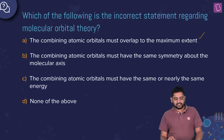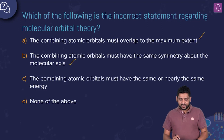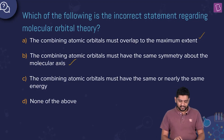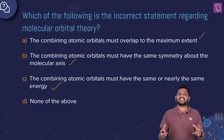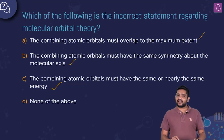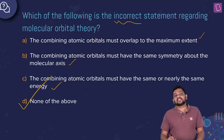For example, 2px and 2px can overlap, but we would not overlap 1s and 2p or 2s and 4p — the atomic orbitals need the same symmetry about the molecular axis. The combining atomic orbitals must have the same or nearly the same energy — this is also true. These are all prerequisites for linear combination of atomic orbitals (LCAO). Since none of these statements are wrong, the correct answer is option D: none of the above are wrong.